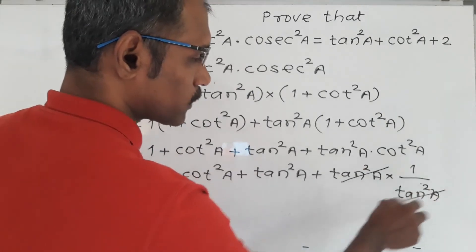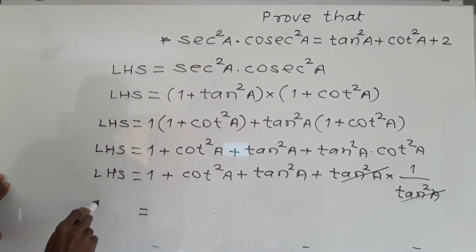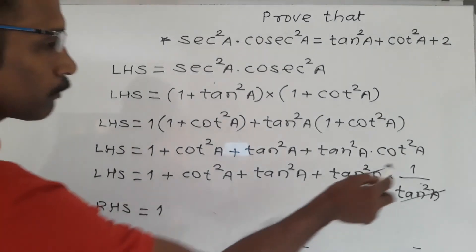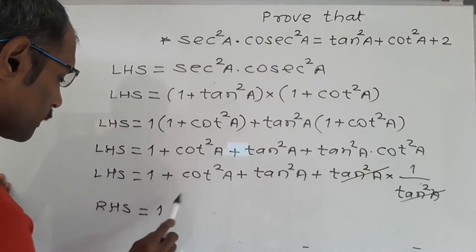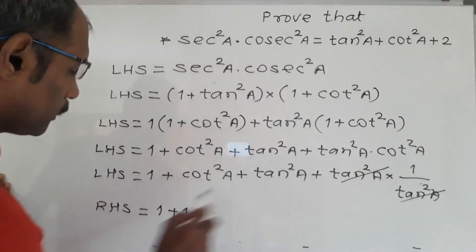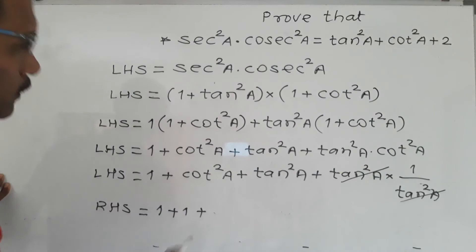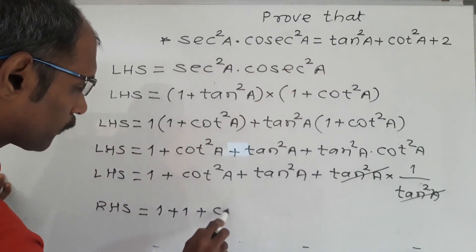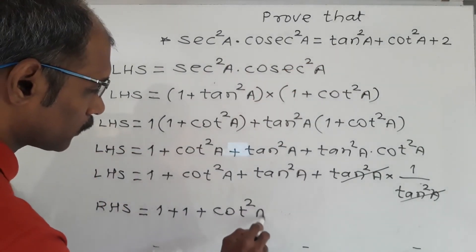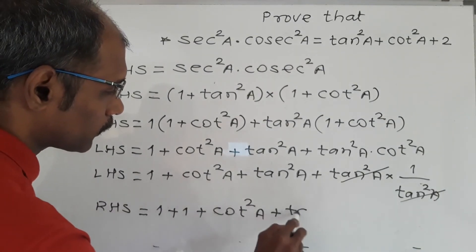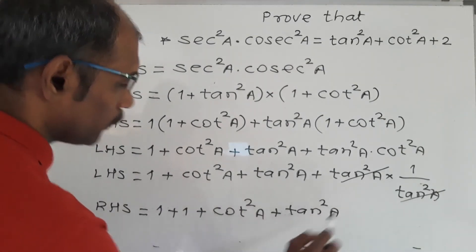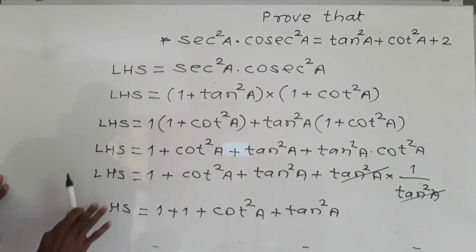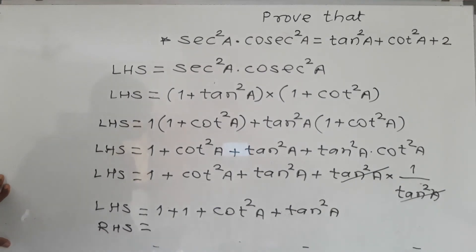Then tan square A into 1 upon tan square A — tan square A cancels — giving 1. So we have 1 plus 1 plus cot square A plus tan square A. That gives us tan square A plus cot square A plus 2, which is our RHS.